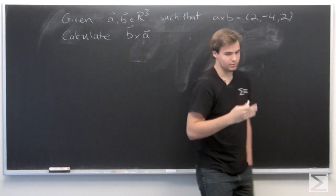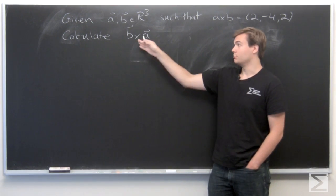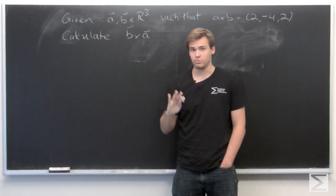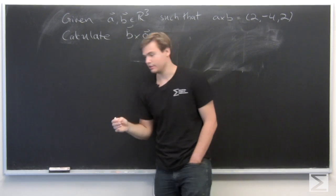So we want to use properties of the cross product to determine B cross A, going the other way around. Because the cross product is not commutative, we don't always get the same answer.